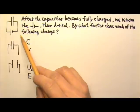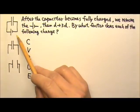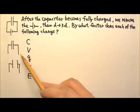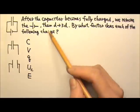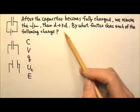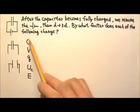A parallel plate capacitor connected to a battery becomes fully charged. Then the battery is removed, after which the plates are pulled farther apart so that the plate separation triples. By what factor does each of the following change?